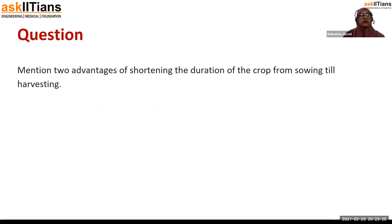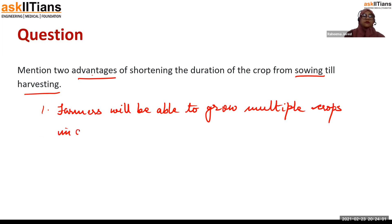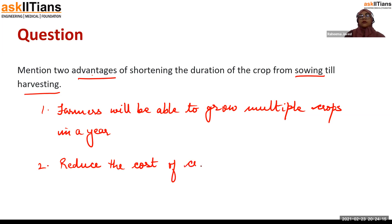The next question asks for two advantages of shortening the duration of a crop from sowing till harvesting. If the duration is shortened, farmers will be able to grow multiple crops in a year. The second reason is that it will reduce the cost of crop production, which is very important — especially thinking about the condition of farmers in India — and it also ensures sustainable agriculture.